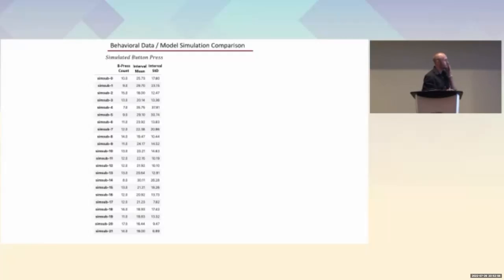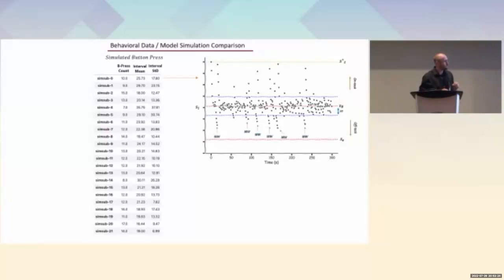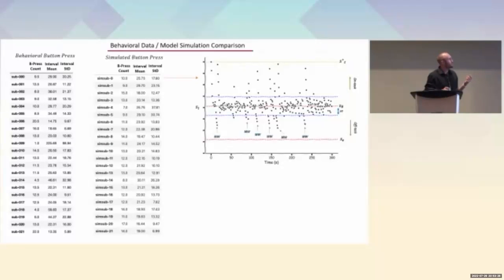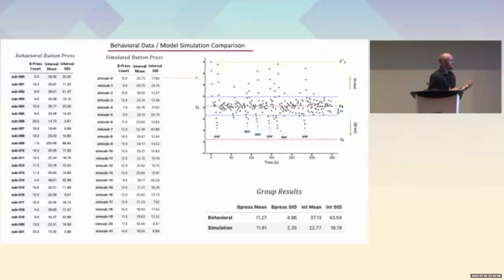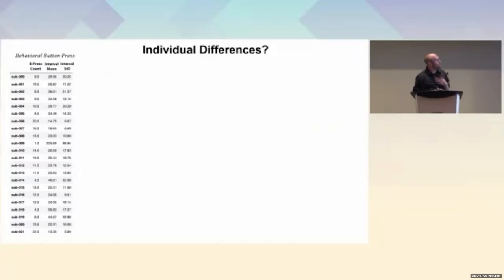I then compared the behavioral data to simulated data. I simulated a meditation run as the model depicts over 300 seconds — equivalently five minutes. A mind-wandering event or button press was determined as any state three standard deviations below mean on-task performance at which a metacognitive sample occurred. I compared simulated data to behavioral button press data by comparing means and variances until I got analogous results. With the current parameters, the model does a decent job of capturing both the counts and intervals between button presses.